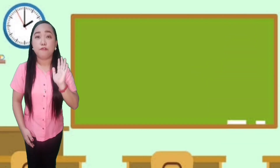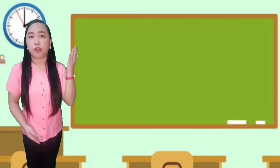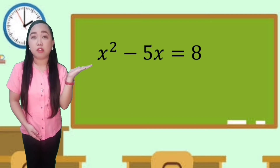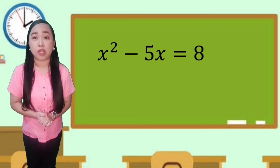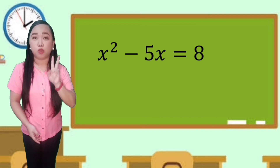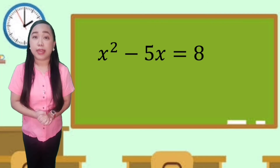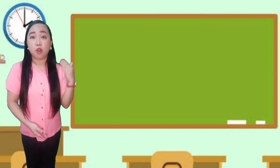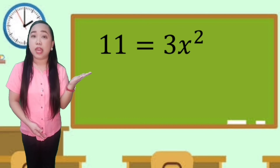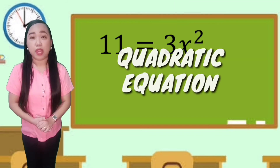I will be showing 5 equations, and we're going to identify if each is a quadratic equation or not. To determine this, the degree must be 2. For the first equation, x squared minus 5x equals 8 — it is a quadratic equation. For the second equation, 11 equals 3x squared — it is also a quadratic equation.